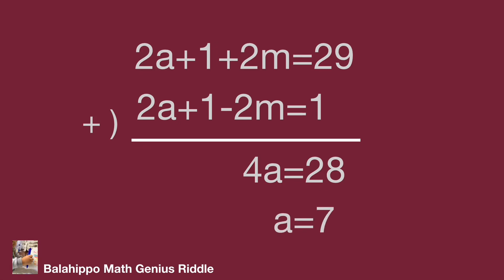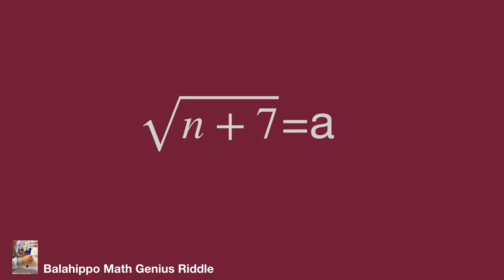Originally we defined square root of n plus 7 equal to a, and a equals 7. So square root of n plus 7 equals 7. Square both sides: n plus 7 equals 7 squared, equals 49. So n equals 42. That's the value we find for n.